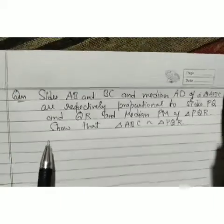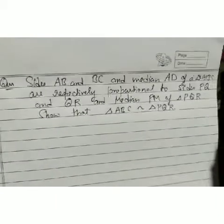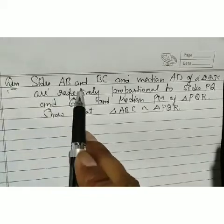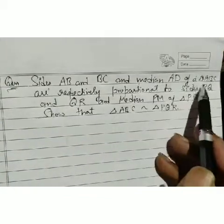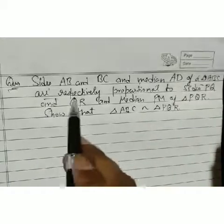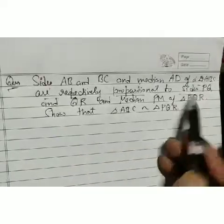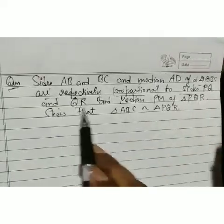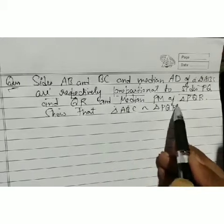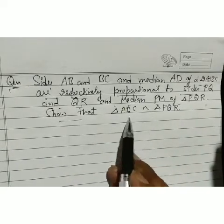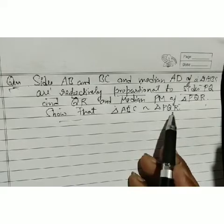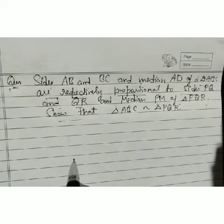The first problem: sides AB and BC and median AD of triangle ABC are respectively proportional to sides PQ and QR and median PM of triangle PQR. We have to show that triangle ABC is similar to triangle PQR.